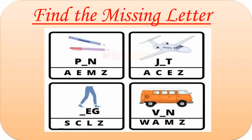Here are some objects. First one is Pen. Missing letter is E. P-E-N. Pen. Second is Jet. Missing letter is E. J-E-T. Jet. Third one is Leg. Missing letter here is L. L-E-G. Leg. Fourth one is Van. Missing letter is V. V-A-N. Van.